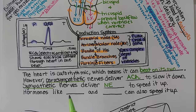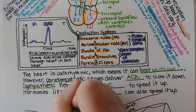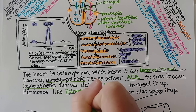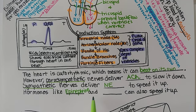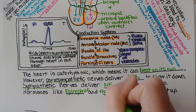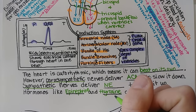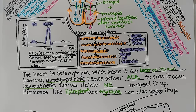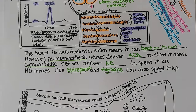Hormones in the bloodstream also affect heart rate. Epinephrine (adrenaline) speeds the heart up, and thyroxin — a metabolic hormone — also accelerates heart rate by increasing ATP production and overall cardiac activity.